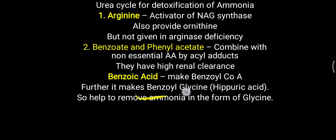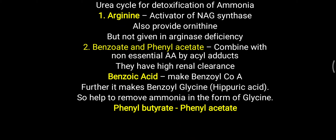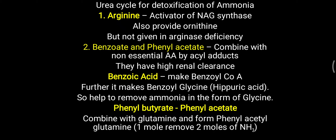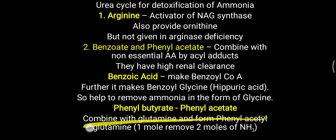Phenyl acetate is given in the form of phenyl butyrate, which acts as a prodrug. Phenyl butyrate is converted to phenyl acetate, which then combines with glutamine. Glutamine has two amino groups in its structure, so phenyl acetate combines with glutamine to form phenylacetyl glutamine. When phenylacetyl glutamine is excreted, it removes two moles of ammonia because two amino groups are present in glutamine.